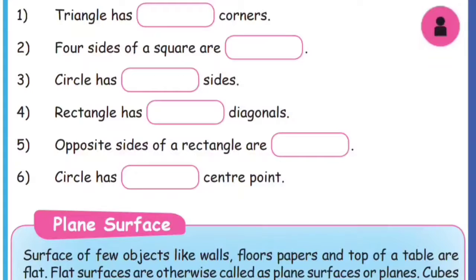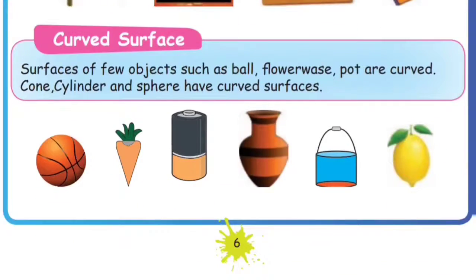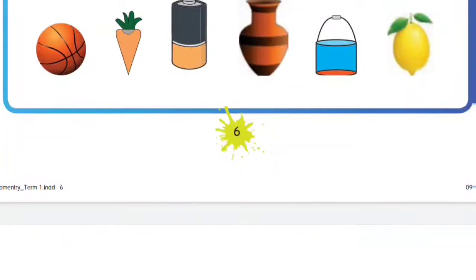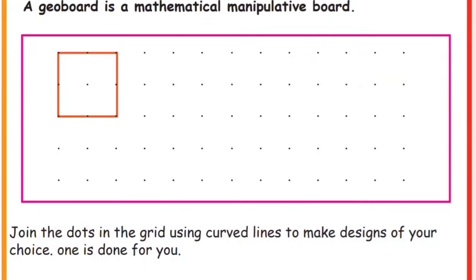The rectangle has opposite sides equal. The circle has one center point. Plane surface, curved surface — how do you find the plane surface? A table is flat — there is no other plane surface. For a curved surface, the other side has no other plane surface.